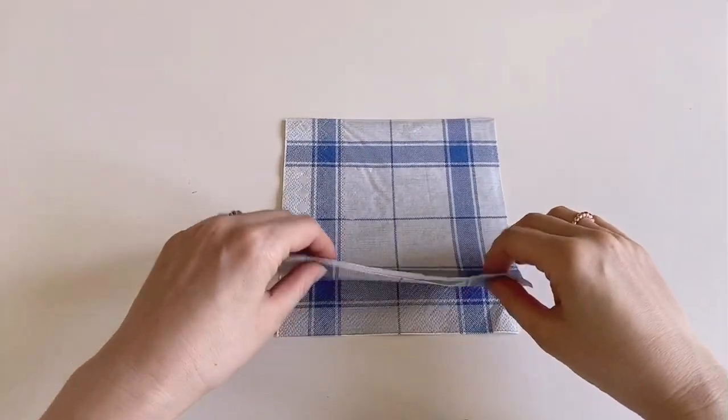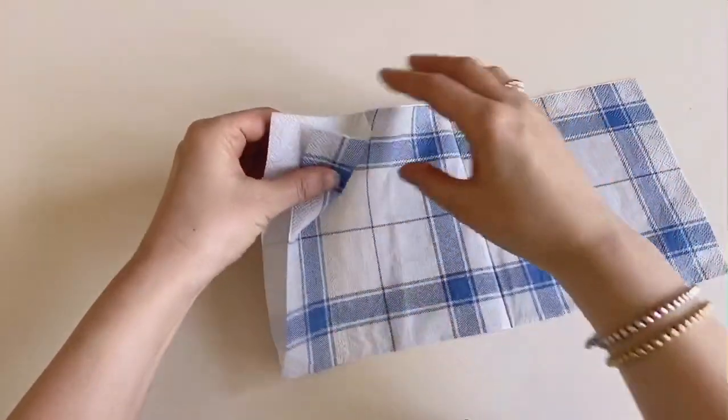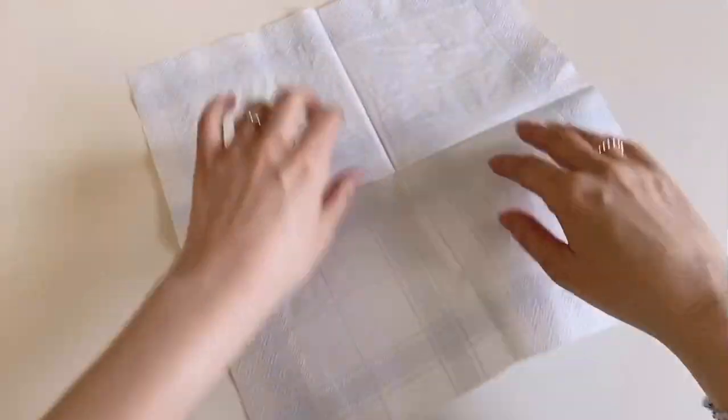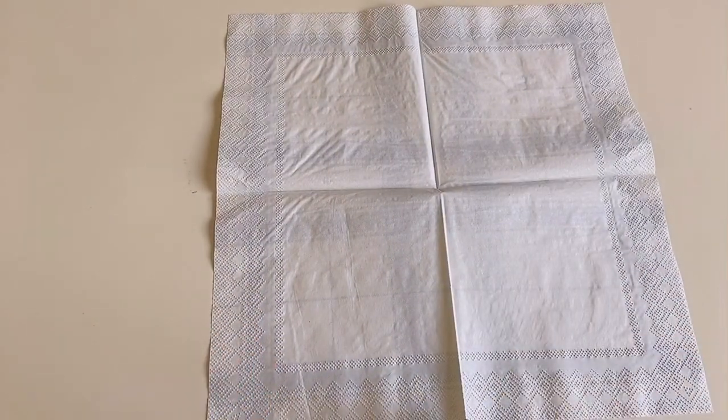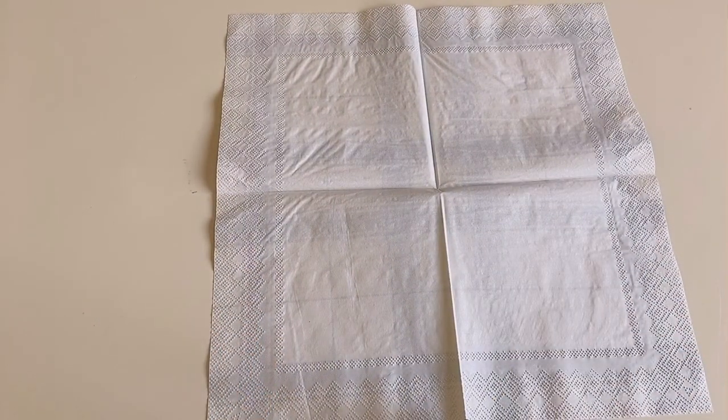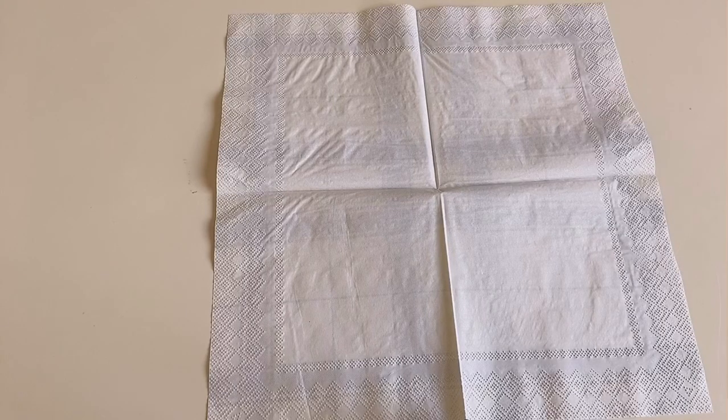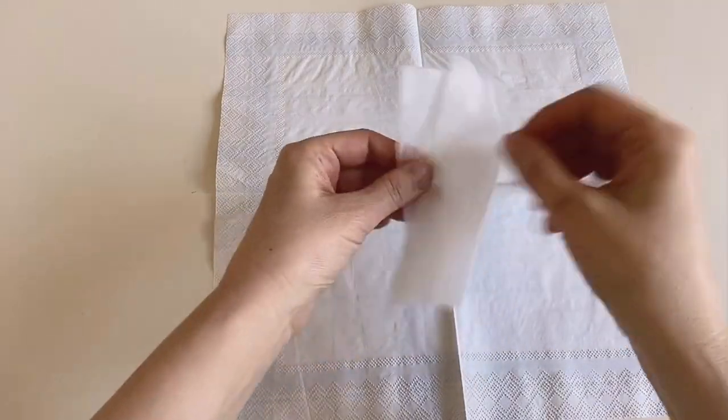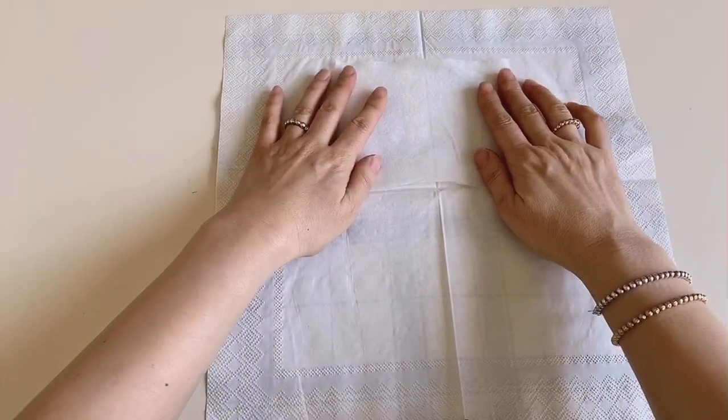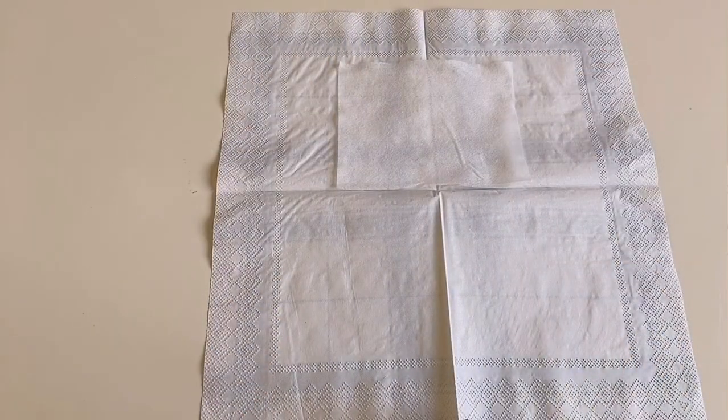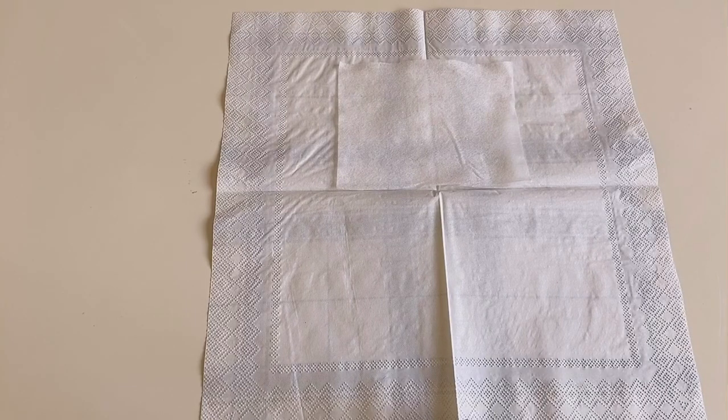Now open the napkins and place the sweeper filter in the middle, like this. Then secure each side with scotch tape.